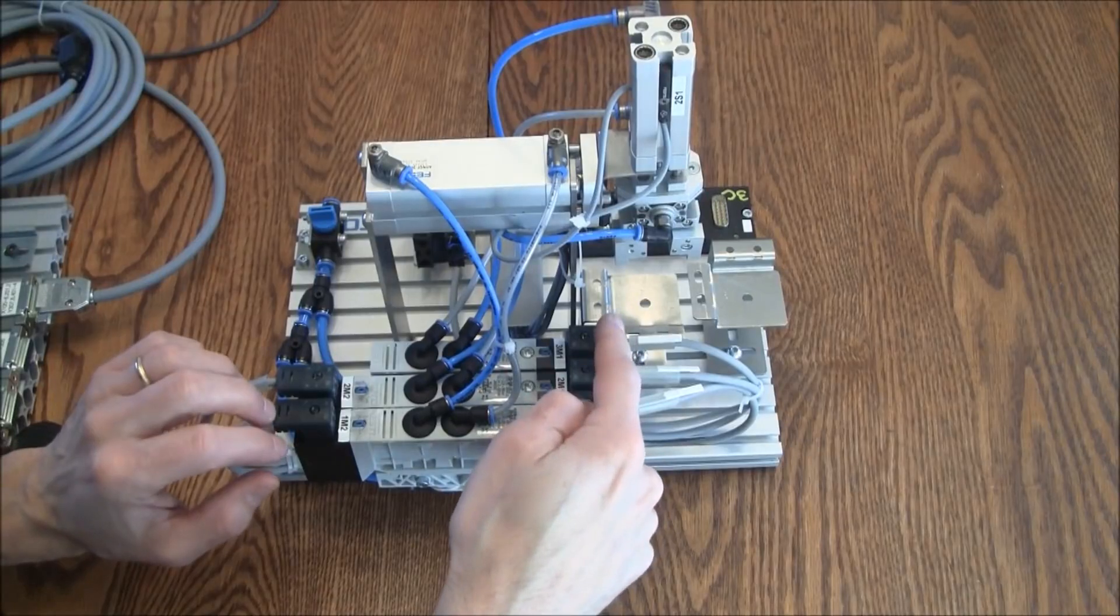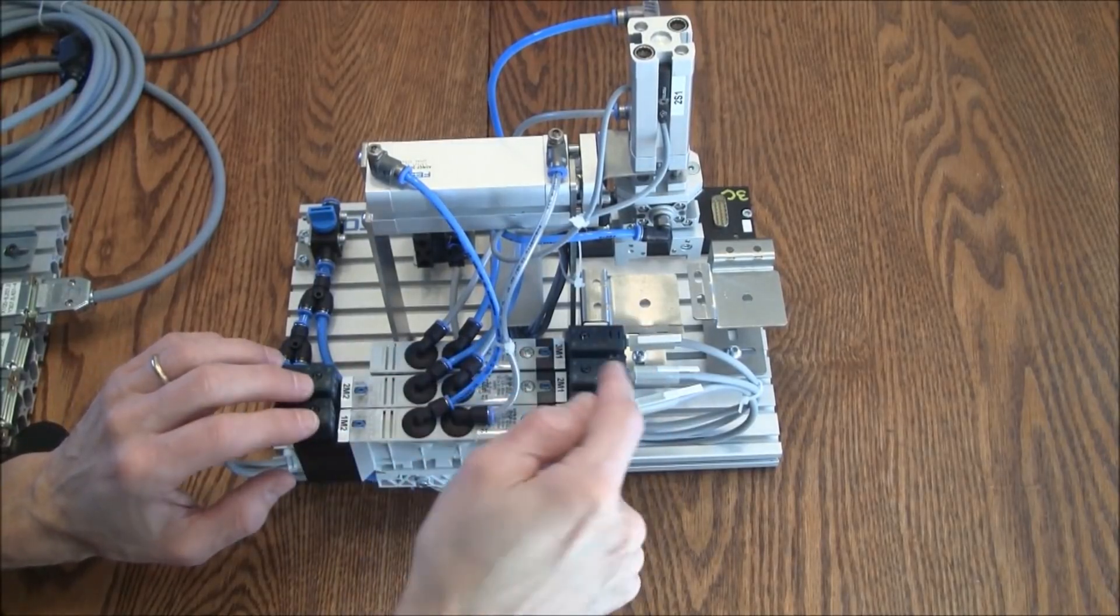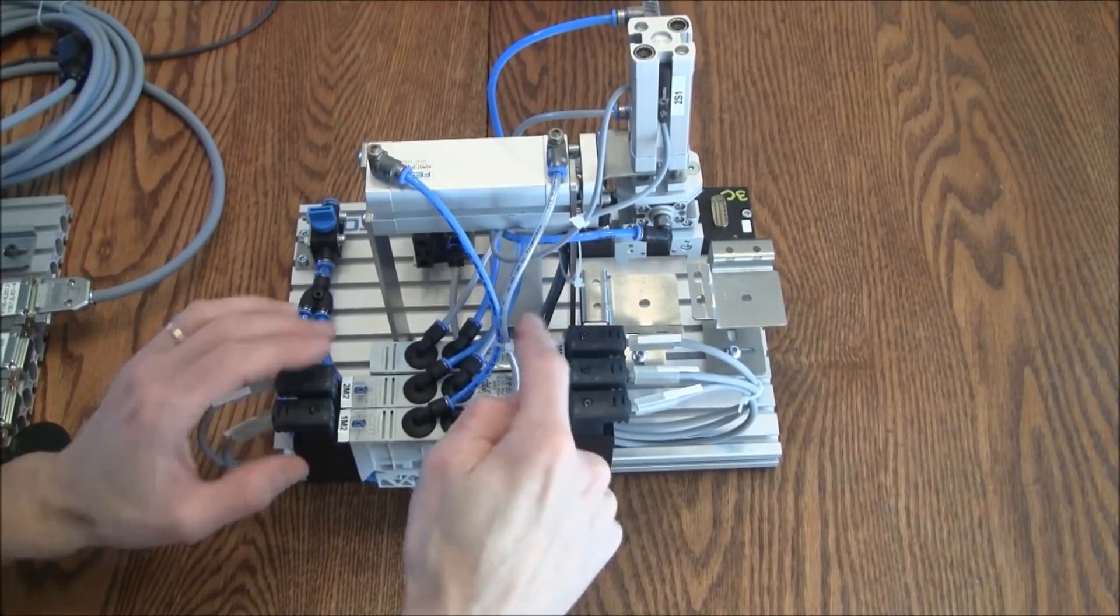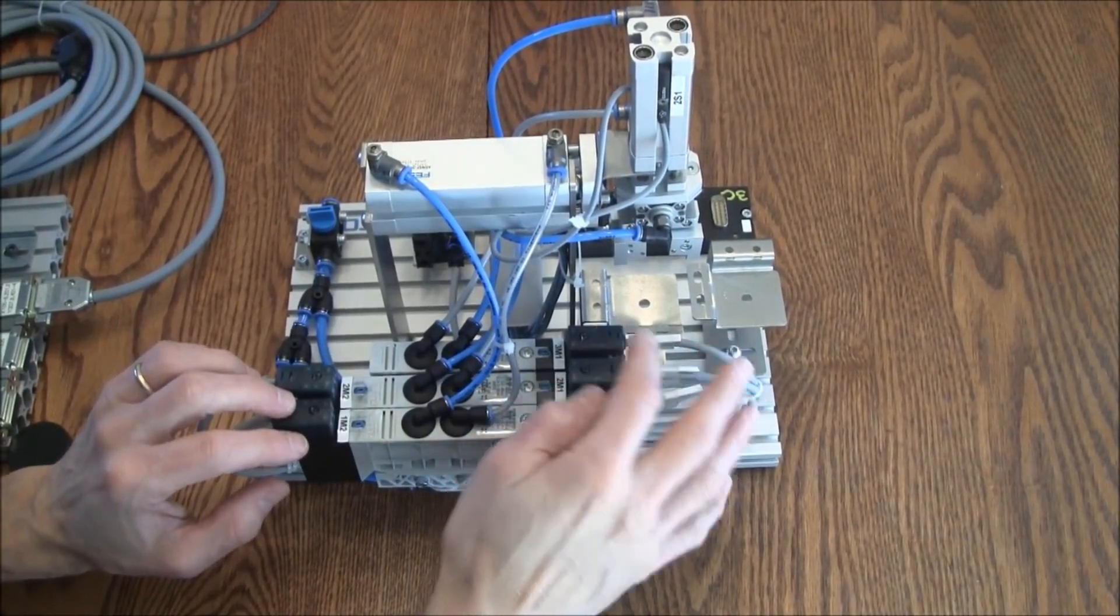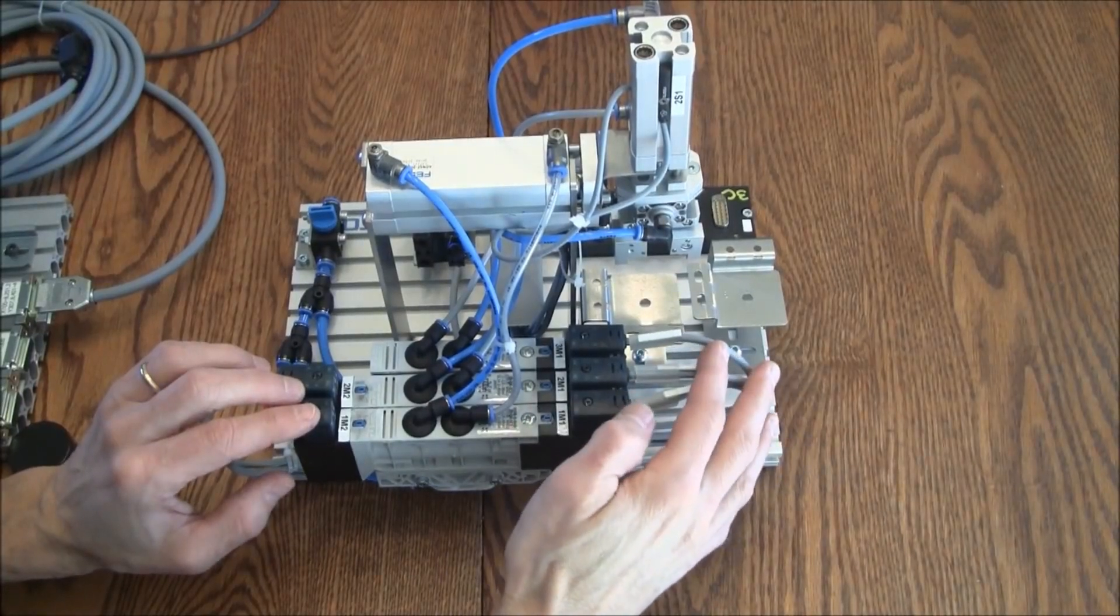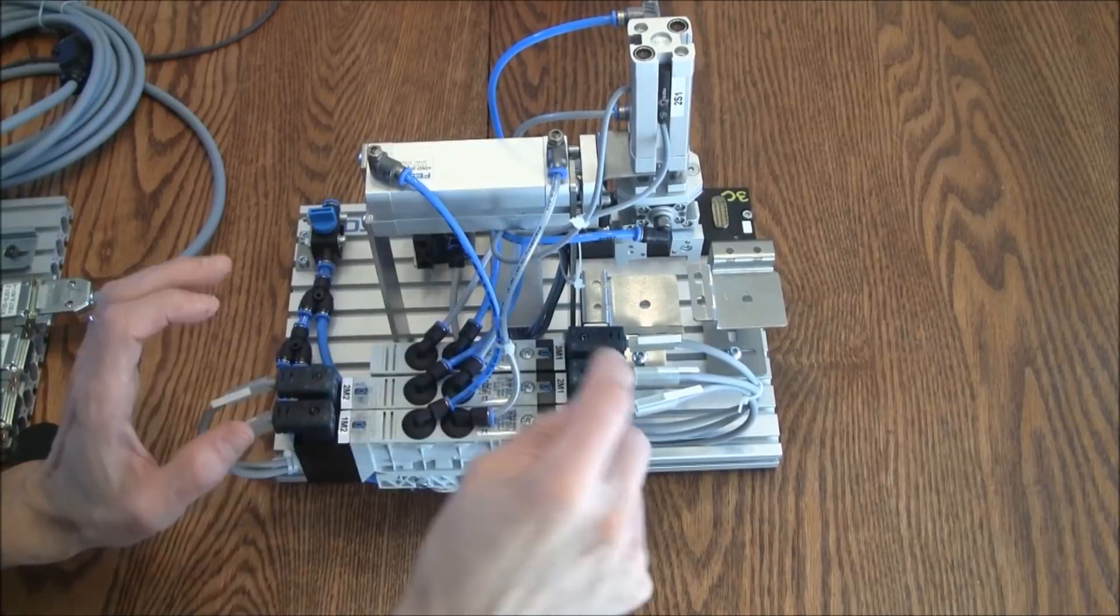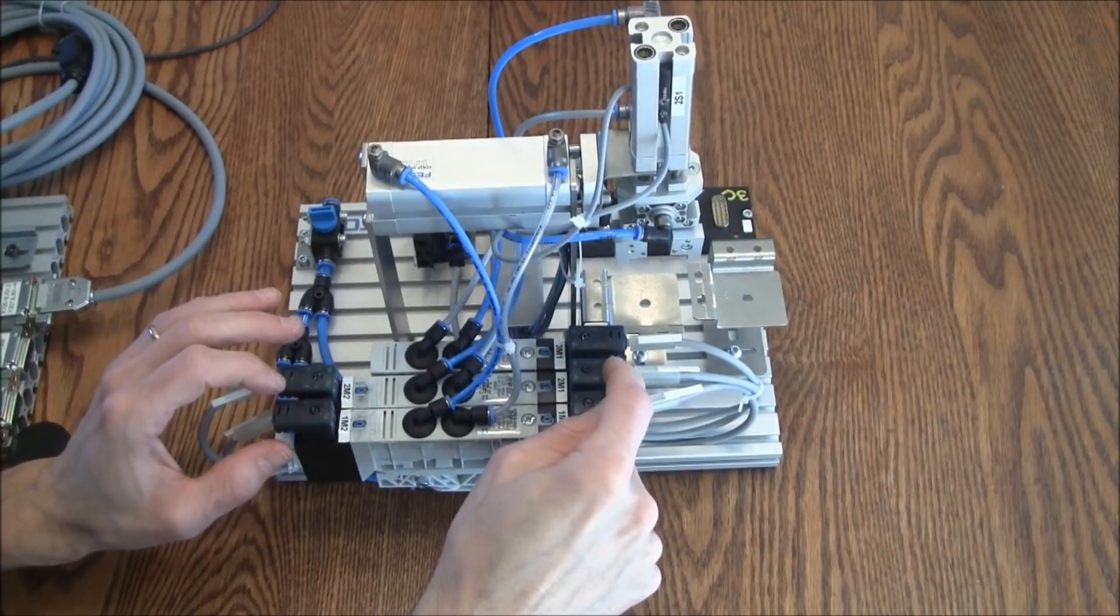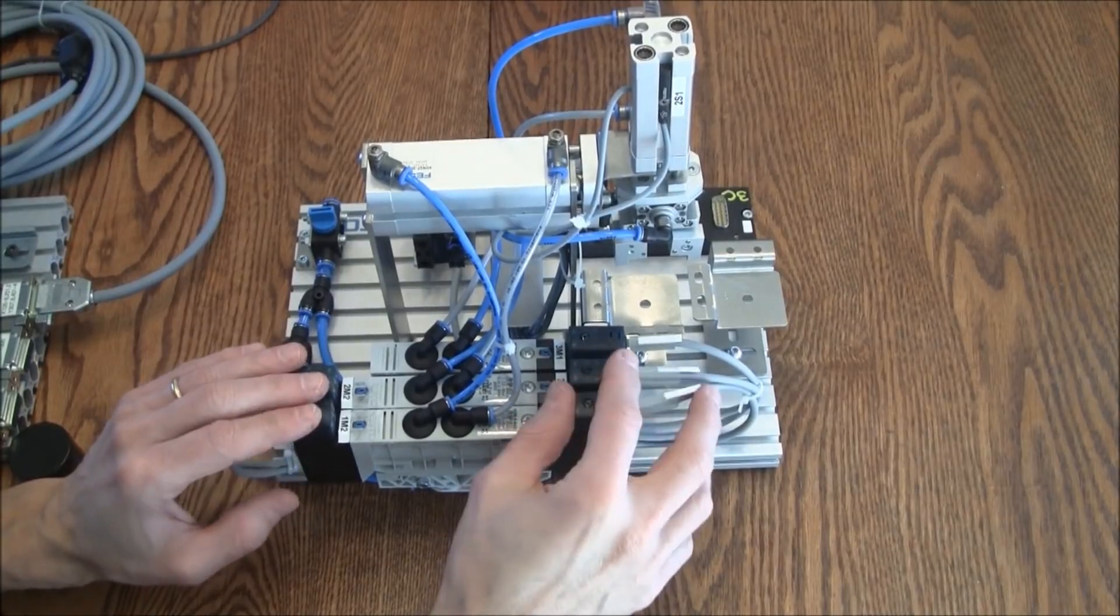One reason is, obviously if we're using single solenoid controlled valves, the valve is going to be cheaper because we only have one solenoid on it. It'll be cheaper. Also, we're using fewer I/O. I only use one output to control one cylinder, whereas these take two outputs to control a single cylinder. So why use the double?